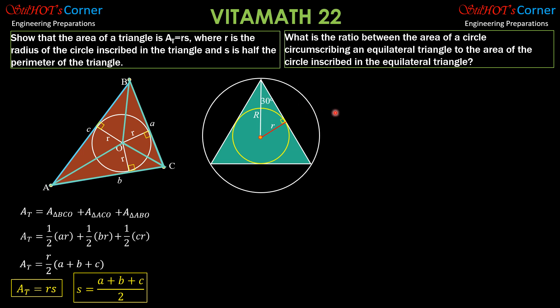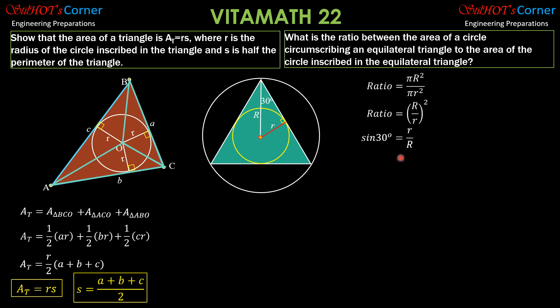The ratio of areas is pi big R squared over pi small r squared. Cancelling out pi, it reduces to the quantity big R over small r, squared. From this right triangle, sine of 30 degrees equals opposite over hypotenuse, where opposite is small r and hypotenuse is big R. So sine 30 degrees, which is one half, equals small r over big R.